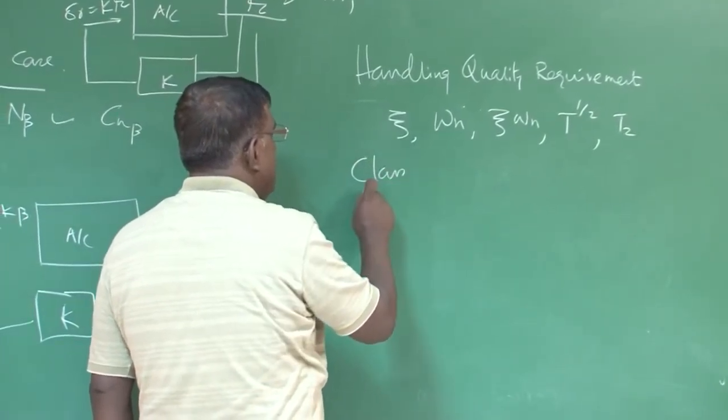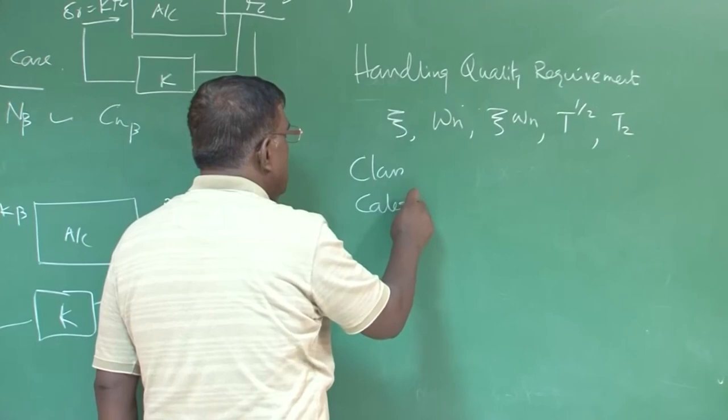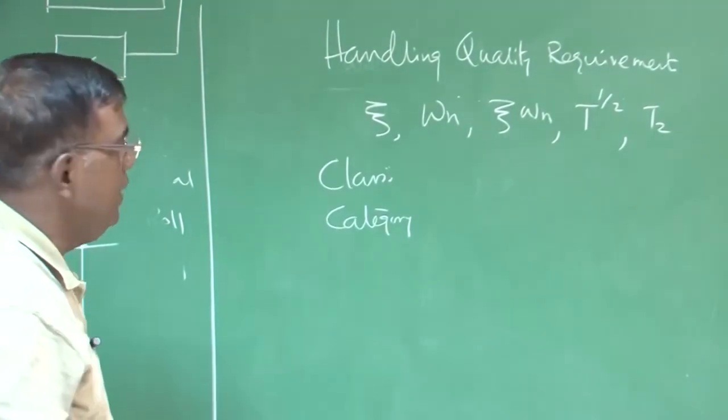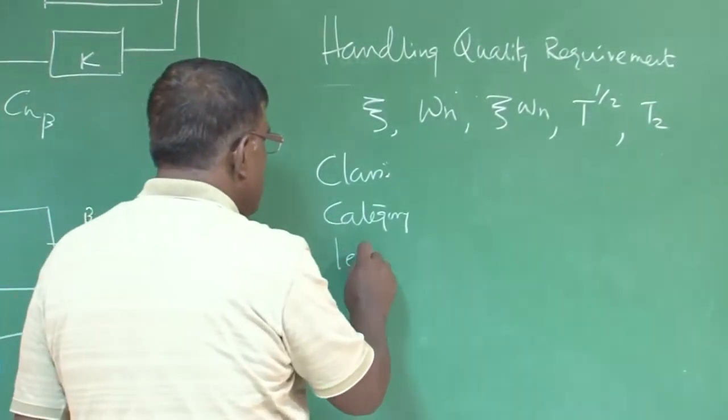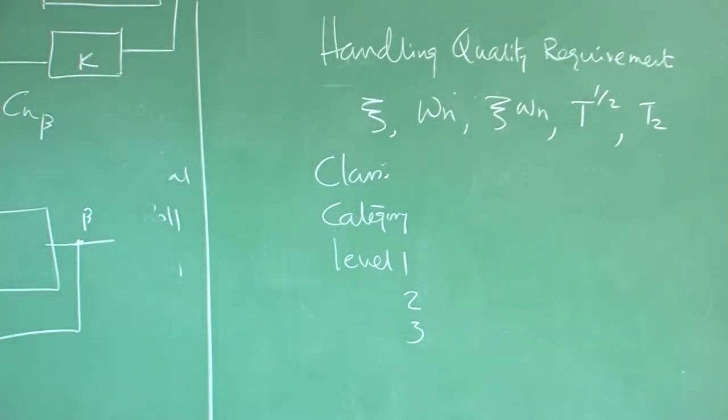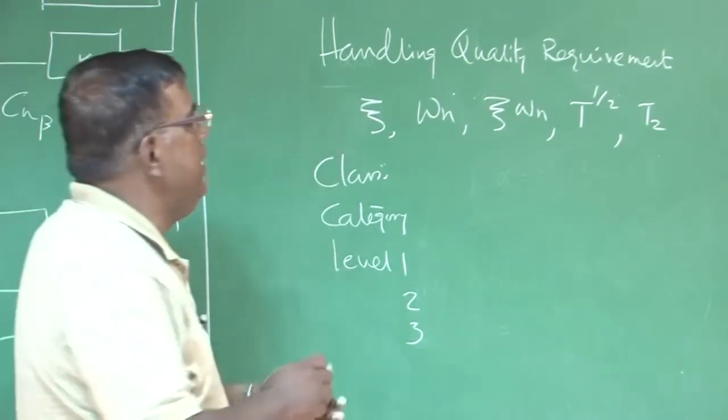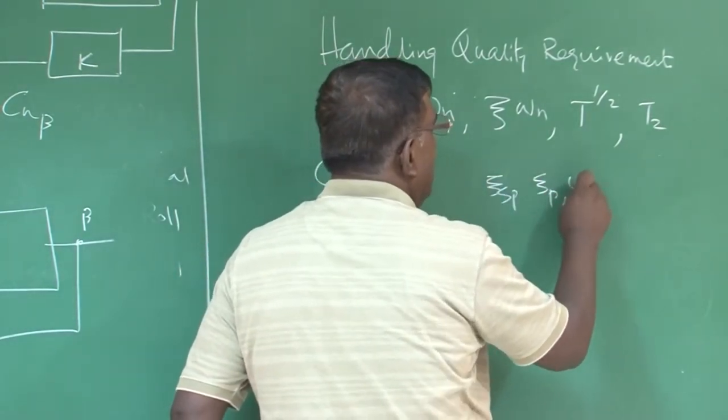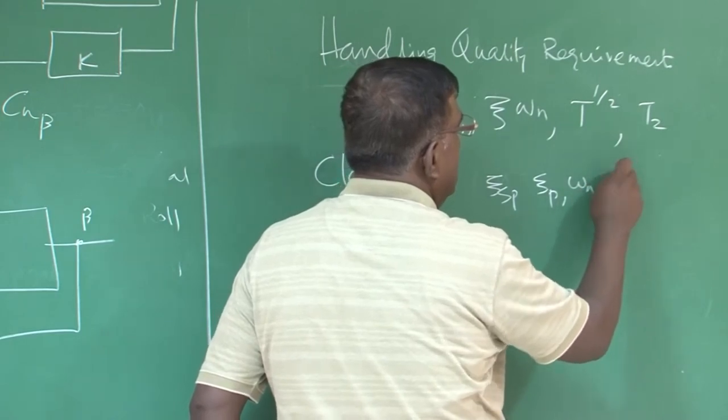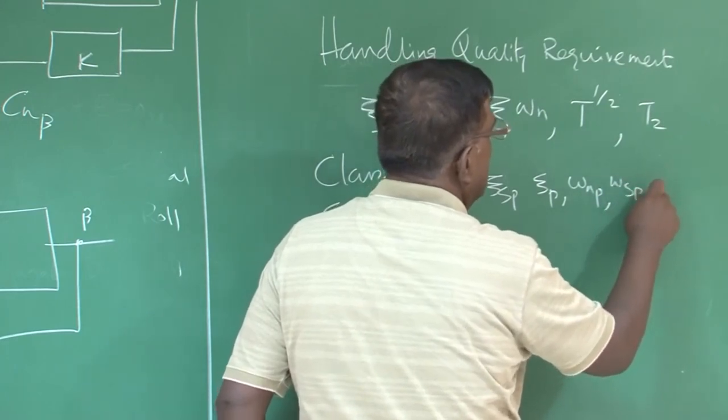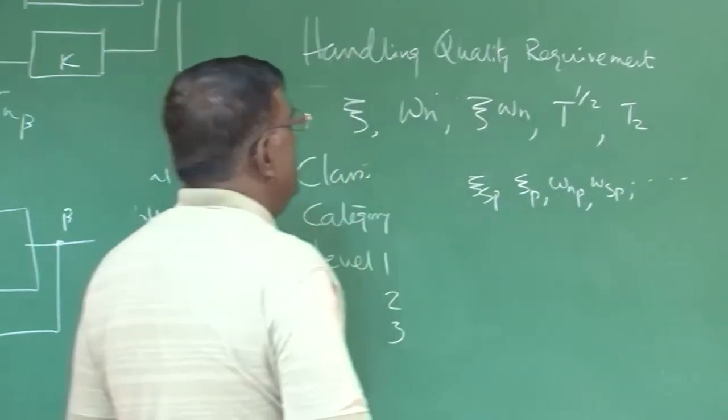In handling quality requirements, we have seen that there are various stages: one is class, then category, what are the flight phases. Classes - what is the basic type of airplane, category - what are the flight phases. Handling qualities, what you want level 1, level 2, level 3, for each class, for each category, to have a level 1 or level 2 or level 3, specified values of zeta short period, zeta phugoid, etc. they are specified.